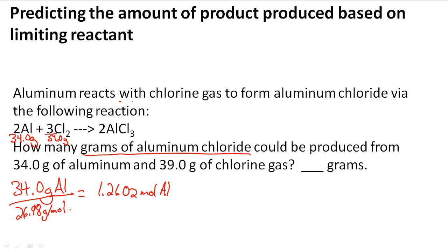Then I'm going to do the same thing for chlorine gas: 39.0 grams divided by 70.906 grams per mole of chlorine gas, which gives me 0.5500 moles of chlorine gas.